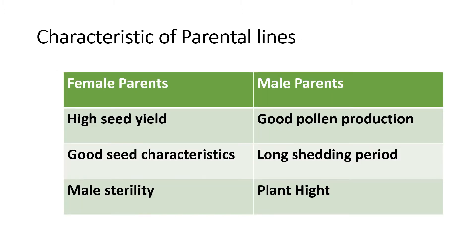Characteristics of parental lines: the female parent should have high seed yield, good seed characteristics, and should possess male sterility — it will be a better choice. For male parents, the better choice is good pollen production, long shedding period, and appropriate plant height.